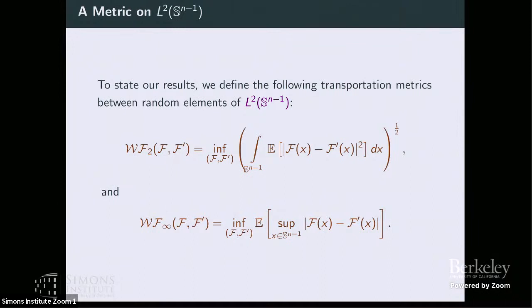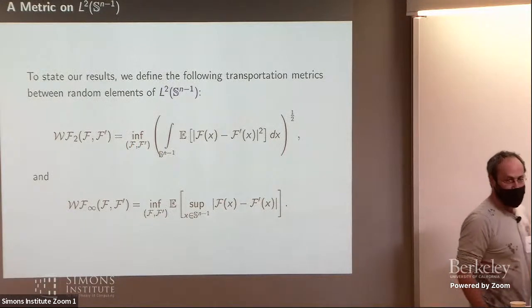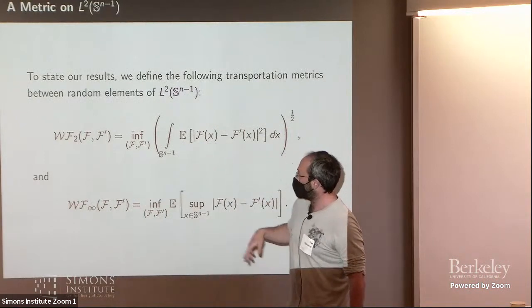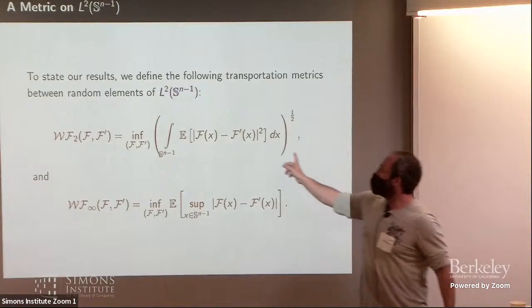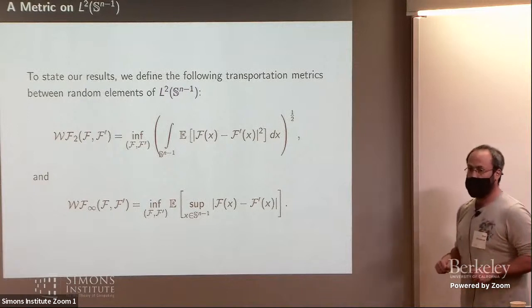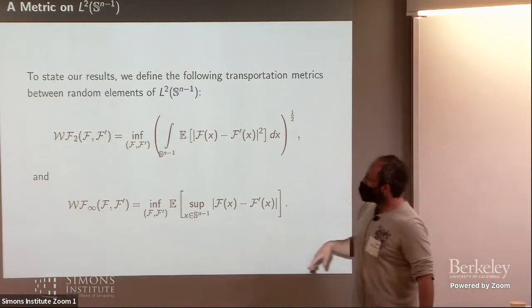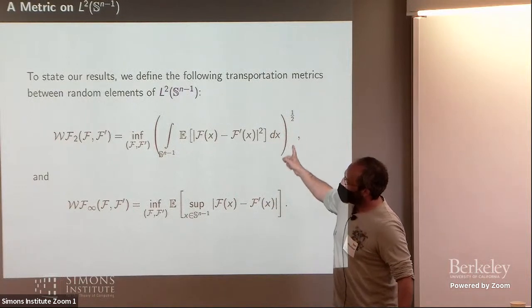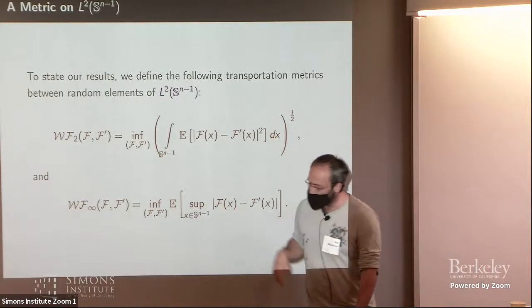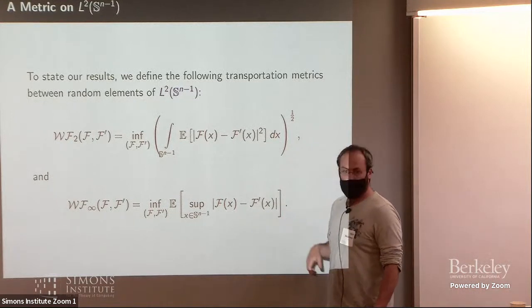So before we can say anything, we need to understand how to metrize this convergence. So a natural metric to introduce on, say, L^2 of the sphere, but it really doesn't have to be on the sphere, are transportation metrics. So let me talk about two of those. We call this a functional Wasserstein distance. But basically, if you have two random functions on the sphere, you look at the infimum over all of the couplings, and you integrate the square difference over the sphere. So you want to minimize the distance in L^2 over the sphere. And this is really the Wasserstein 1 distance on L^2.